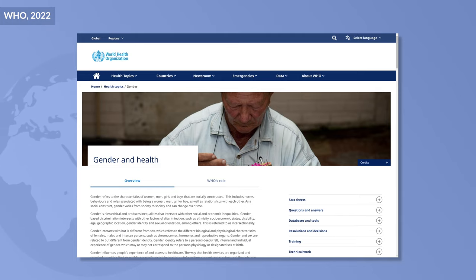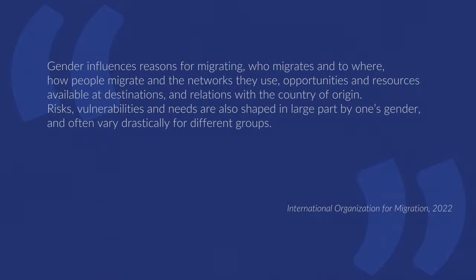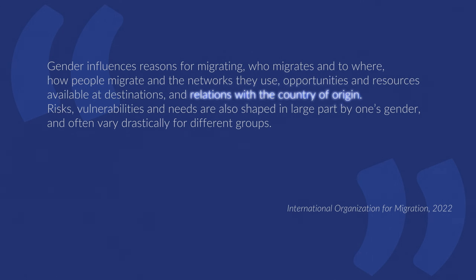Now let's bring gender and migration together — the real purpose of this video. According to the International Organization for Migration, gender influences reasons for migrating, who migrates and to where, how people migrate and the networks they use, opportunities and resources available at destinations, and relations with the country of origin. Additionally, risks, vulnerability, and needs are also shaped in large part by someone's gender.